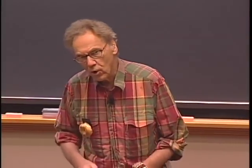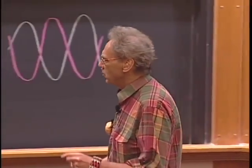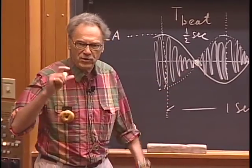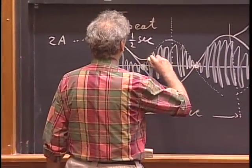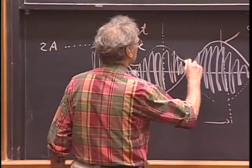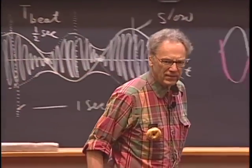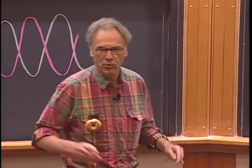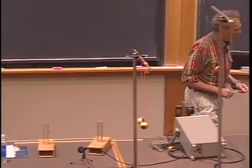If the amplitudes of the two are not the same, you never get zero—there's always some residual, so you get a modulation that never reaches zero. It's harder to hear that difference, because your ears can't really distinguish a little bit of sound from silence. But I can make you see it by picking up the signals of the two tuning forks with a microphone and displaying it on an oscilloscope.